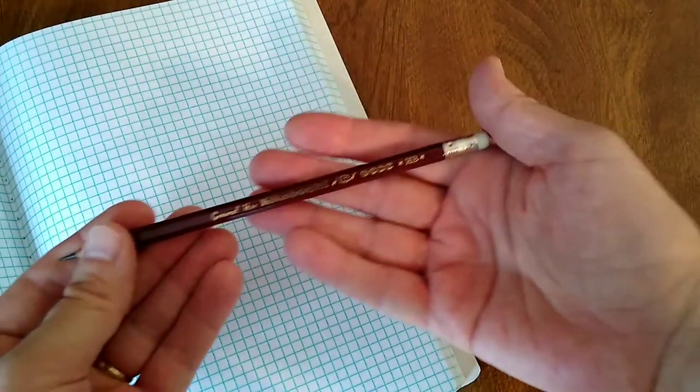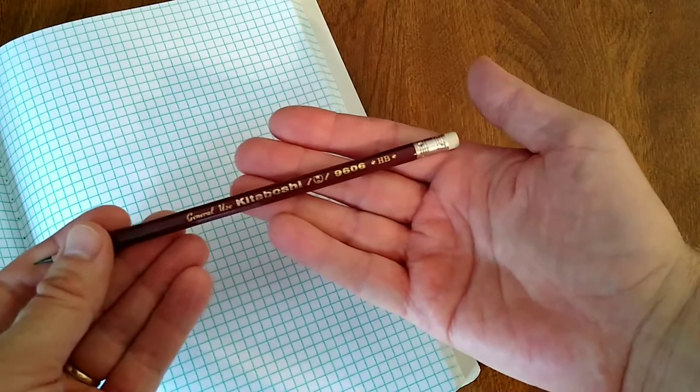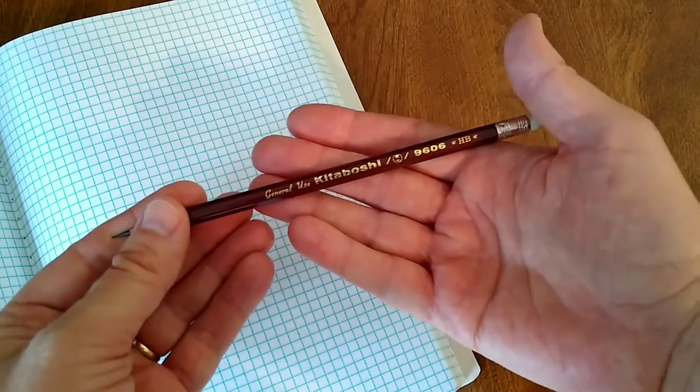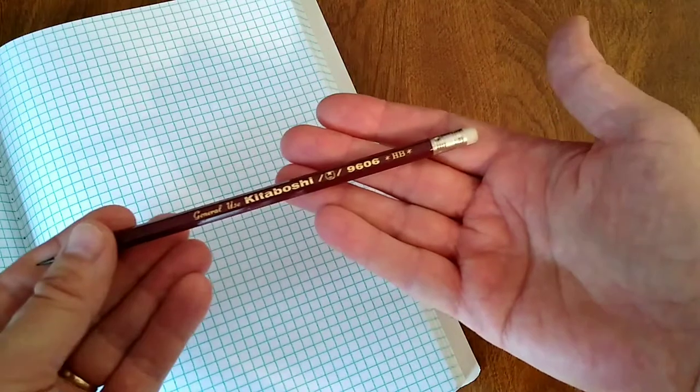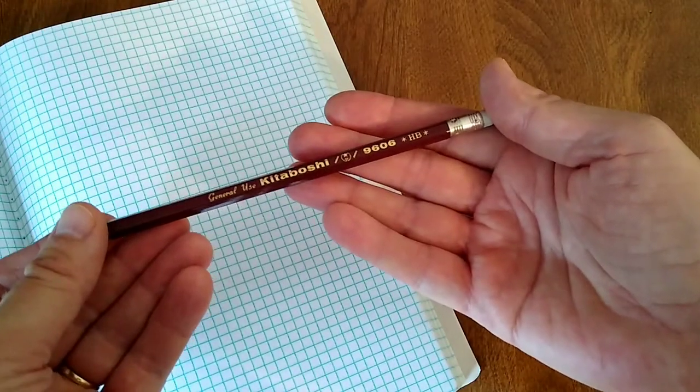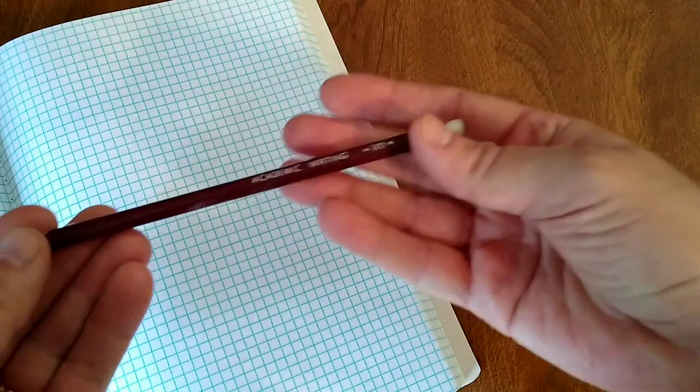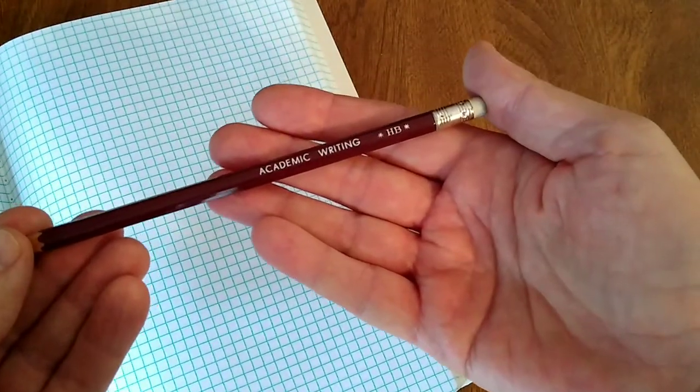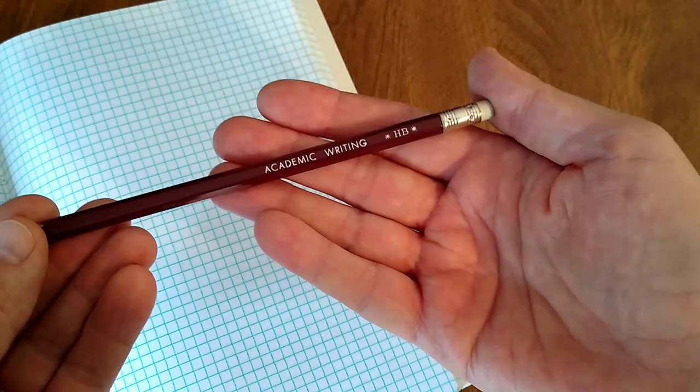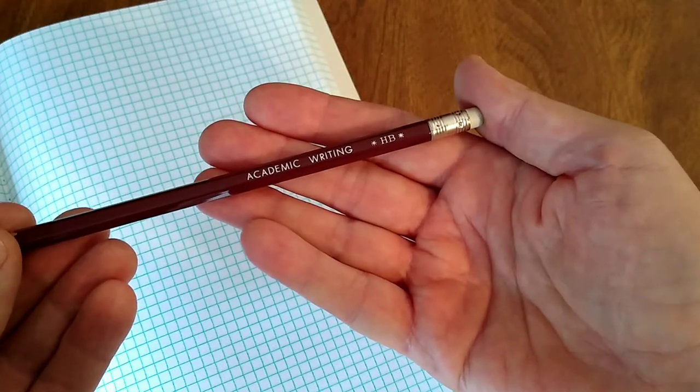So without further ado, my top seven writing pencils with a few honorable mentions for special use. Number one, my number one favorite writing pencil comes from a Japanese company called Kitabashi. It's their 9606 HB general use writing pencil. It has a terrific soft, dark core.